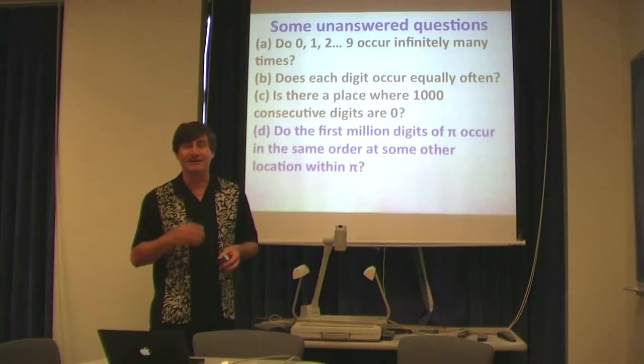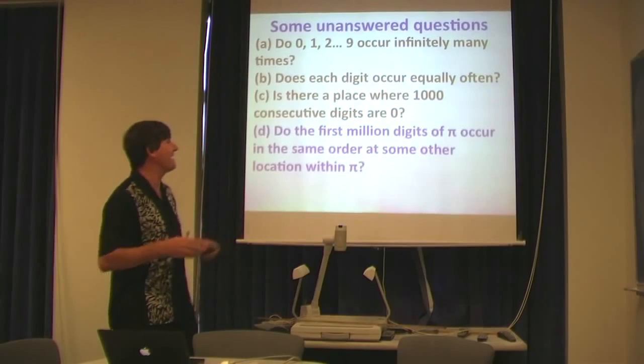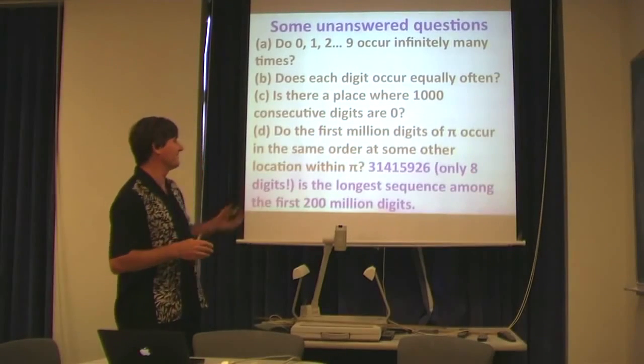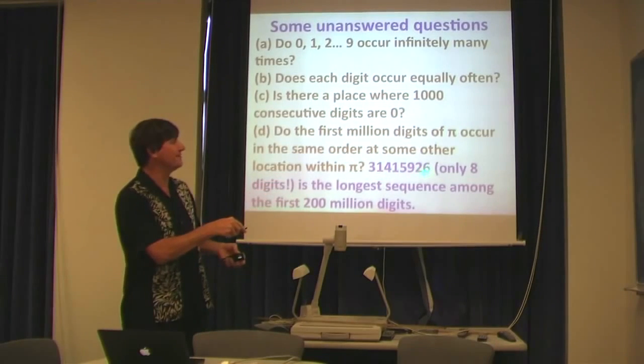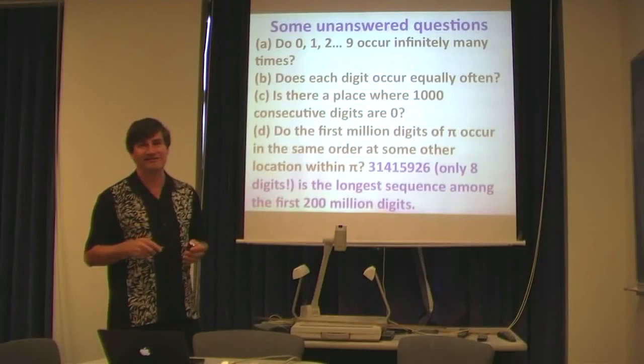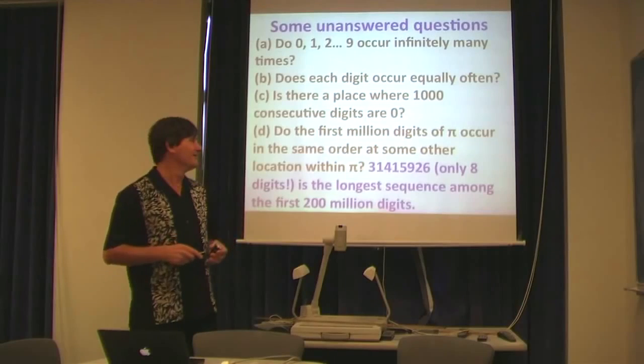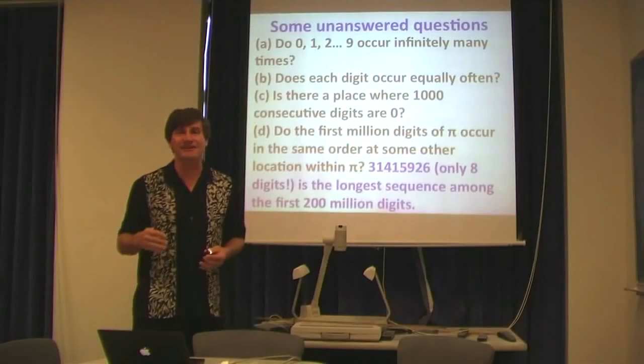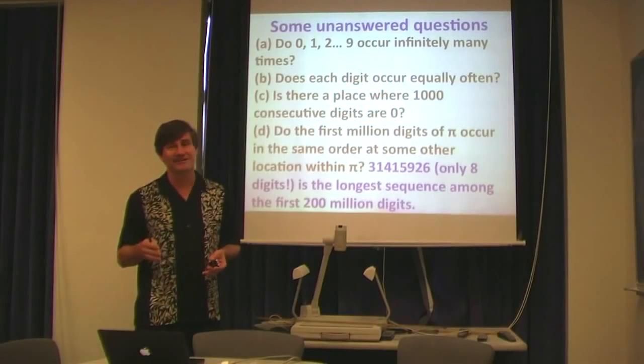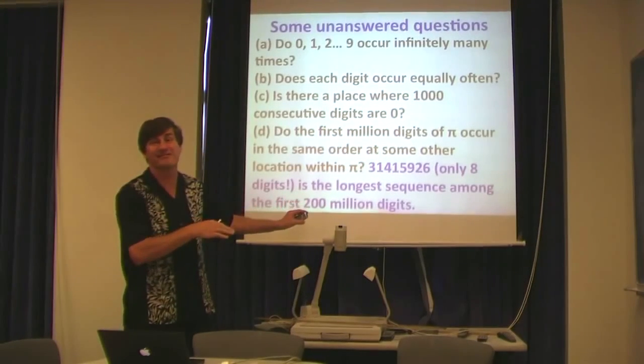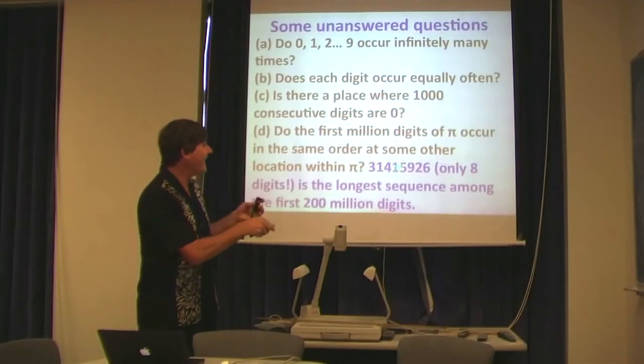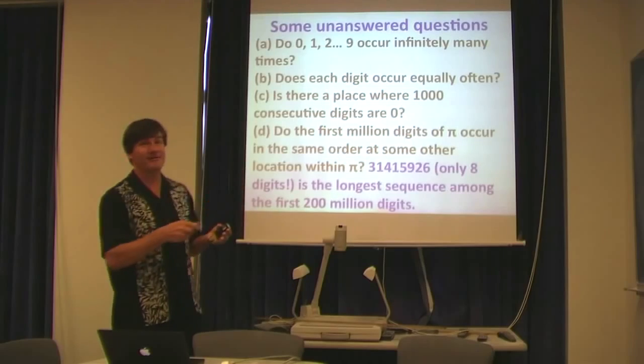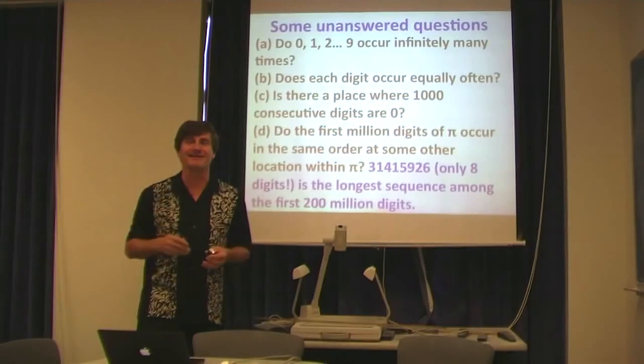And do the, for example, first million digits of pi occur anywhere else in the sequence of digits that is pi? We don't know that. In fact, all that we really know is that within the first 200 million digits, for example, 3, 1, 4, 1, 5, 9, 2, 6, only the first eight digits, is the longest sequence among the first 200 million. That gives you some idea of how short these sequences have been found to be repeating within pi. In other words, very long sequences have not yet been found. That doesn't mean they don't exist, and there are some longer ones beyond the first 200 million digits of pi, but within the first 200 million digits of pi, that's the longest one, only eight digits that exist. So, does a sequence occur where there's the first million digits of pi? Maybe. Somewhere in pi it exists, but we don't really know.